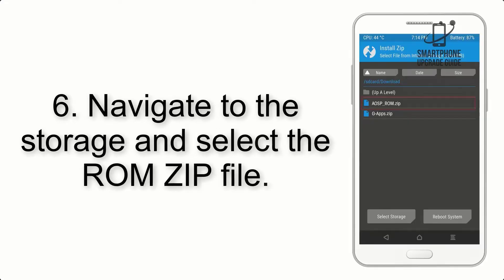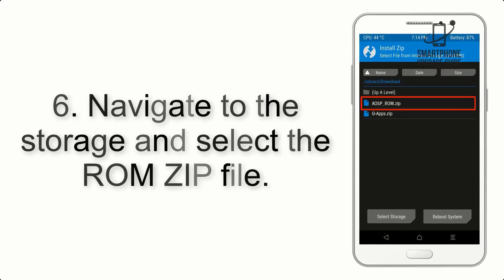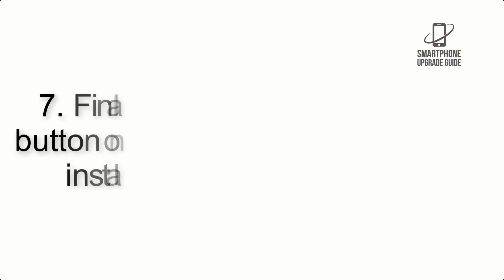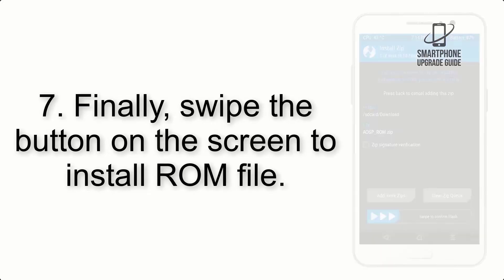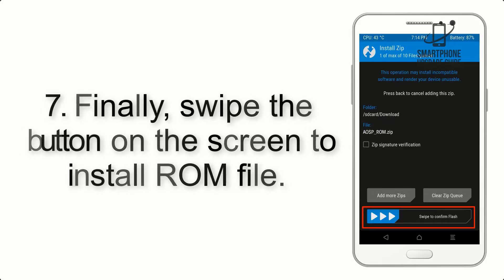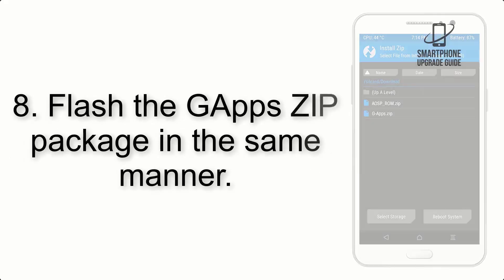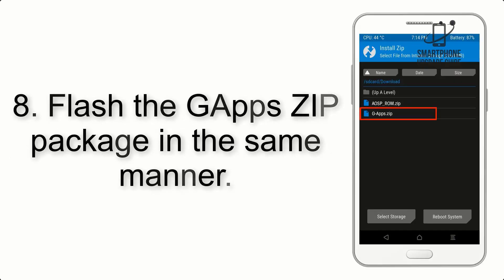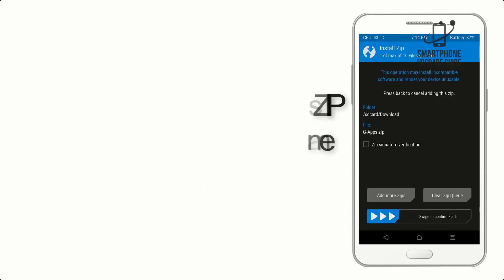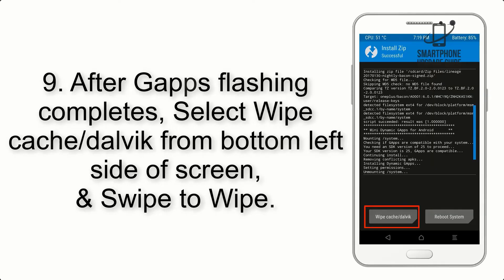Step 5: Go back to the recovery main screen and tap on the Install button. Step 6: Navigate to the storage and select the ROM zip file. Step 7: Finally, swipe the button on the screen to install the ROM file.